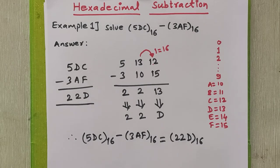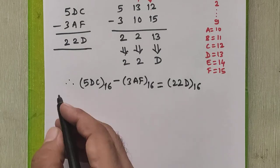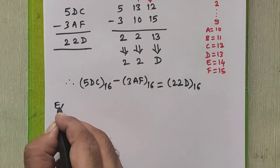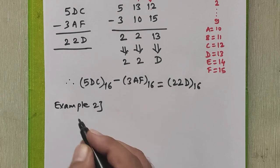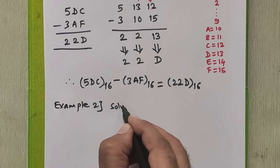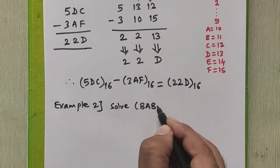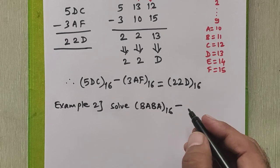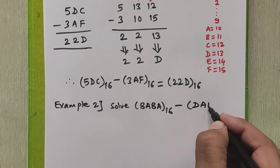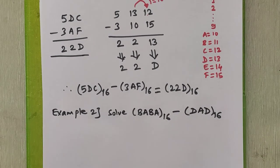To understand direct hexadecimal subtraction better, we will see one more example. In this video, example 2 is BABA base 16 minus DAD base 16.